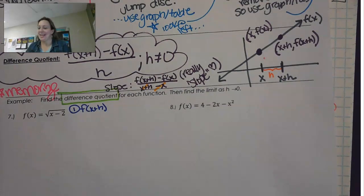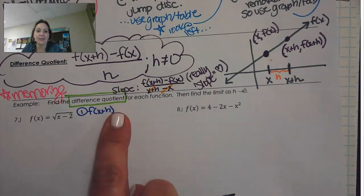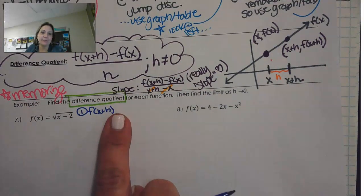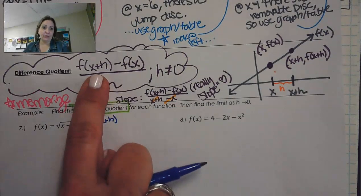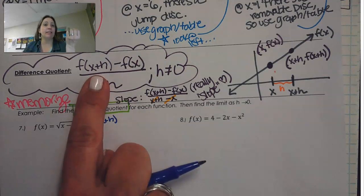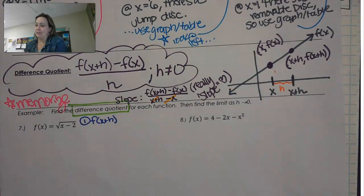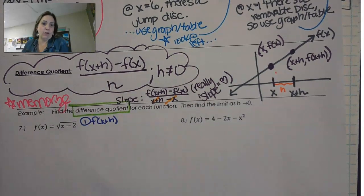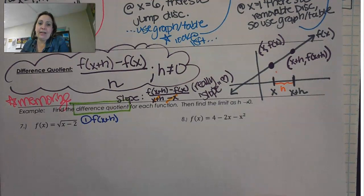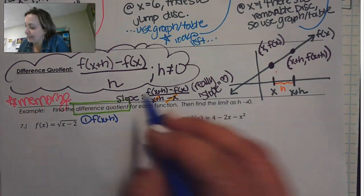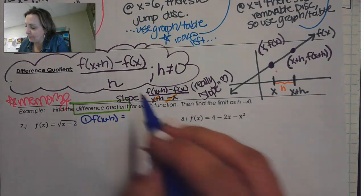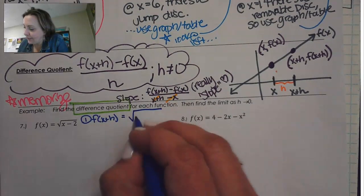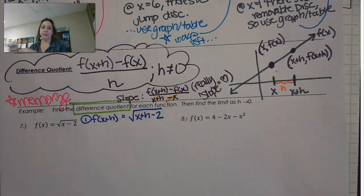It's asking us to find the difference quotient for each function and then find the limit as h approaches 0. In the difference quotient, we need to find f of x plus h. Sometimes f of x plus h is going to be really clean, sometimes it's not. I usually try to find what f of x plus h is first, so my problem isn't too long. We know that to find f of x plus h, we just put x plus h in place of x. Here, that's just going to be the square root of x plus h minus 2.